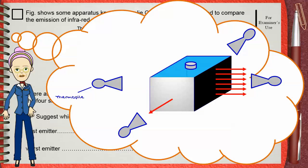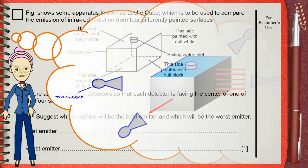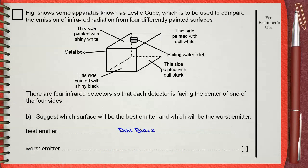That's why the thermopile facing the black surface will give the higher reading. So the best emitter is dull black and the worst emitter is the shiny white.